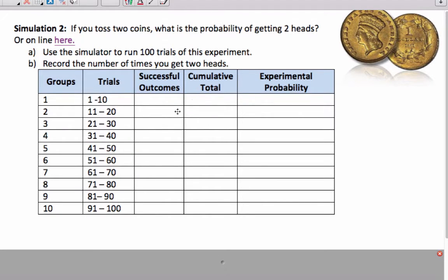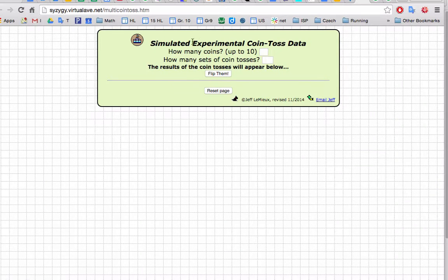So here's our table, and I'm going to go to that applet, and I'm going to simulate. I'm going to flip it 10 times, and how many sets of coins am I going to have? I'm going to set two, and now I'm going to flip them.